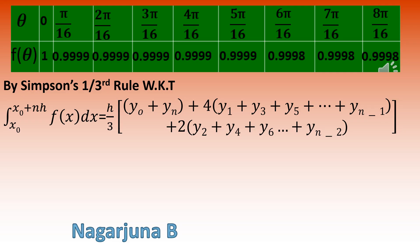From the table: y₀ = 1, y₁ = 0.9999, y₂ = 0.9914, y₃ = 0.9619, y₄ = 0.9063, y₅ = 0.8192, y₆ = 0.6935, y₇ = 0.4714, y₈ = 0. Here yₙ = y₈ is the last term, yₙ₋₁ = y₇, and yₙ₋₂ = y₆ (since n − 2 = 8 − 2 = 6).